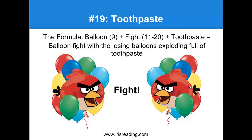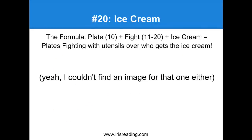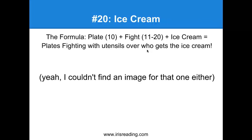On number 20, we've got to remember ice cream. The zero is coming from ten — remember the plates. So we're taking a plate, adding a fight (because it's 11 through 20), and adding ice cream. Picture plates fighting with utensils over who gets the ice cream. Angry plates with faces on them, fighting with their forks and knives, breaking plates everywhere, all fighting over some ice cream. It doesn't have to make sense — but if I can picture this visually in my head, it's going to stick.